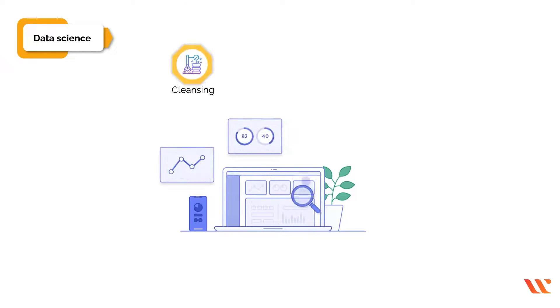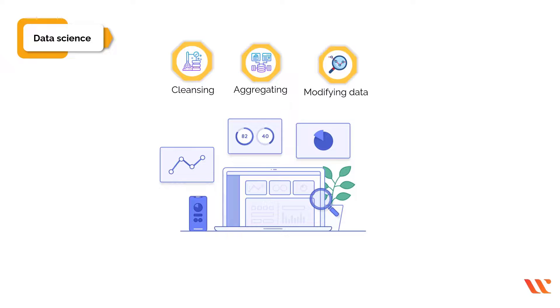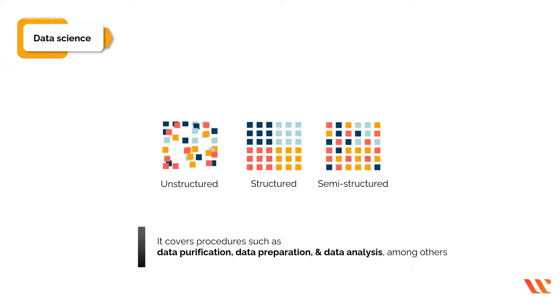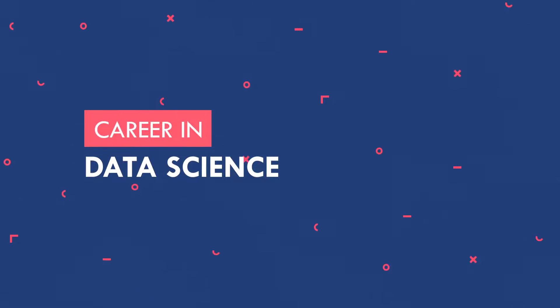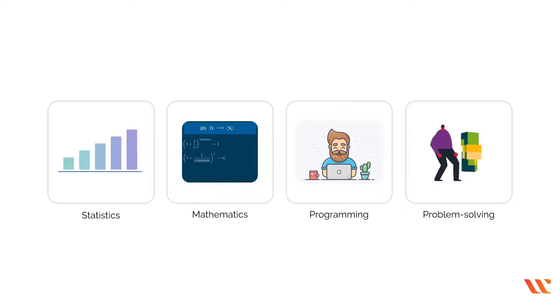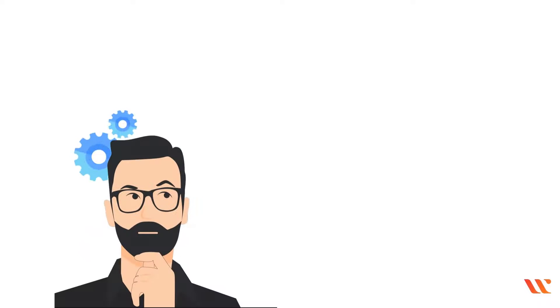Data science refers to the processing, cleansing, aggregating, and modifying of data in order to undertake advanced data analysis. In the field of data science, you will work with unstructured, structured, and semi-structured data. It covers procedures such as data purification, data preparation, and data analysis. If you're interested in statistics, mathematics, programming, problem solving, data capture in novel methods, and the capacity to see things from new perspectives, then you should opt for this career.